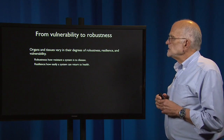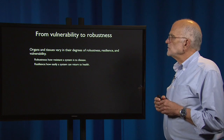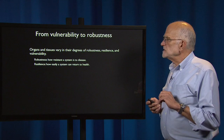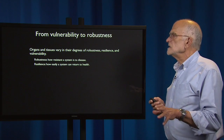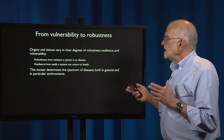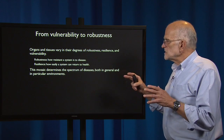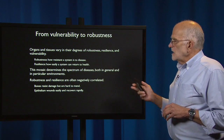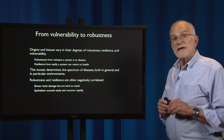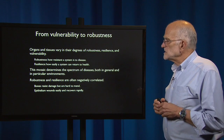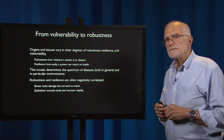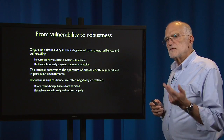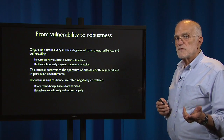Organs and tissues differ in their robustness, their resilience, and their vulnerability. Robustness means how resistant a system is to disease, and resilience means how easily a system can return to health. That mosaic determines the spectrum of diseases, both in general and in particular environments. Robustness and resilience are often negatively correlated. Bones, for example, resist damage so they're robust, but they're hard to mend. On the other hand, epithelium wounds easily but it recovers rapidly, so it's resilient but it's not very robust.